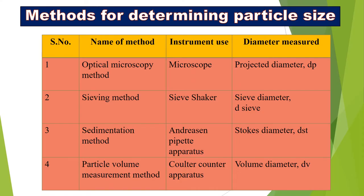As I already told you, there are four basic methods for determining particle size which I covered in the previous lecture. The four methods are: optical microscopy, sieving, sedimentation, and particle volume measurement.